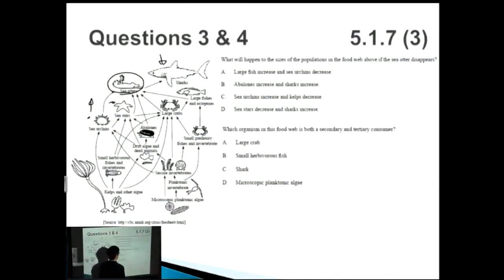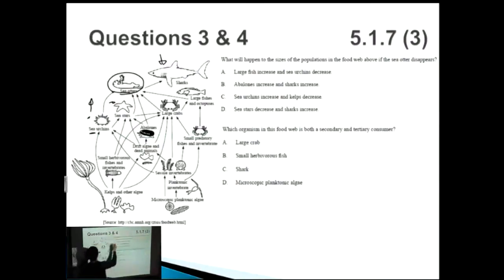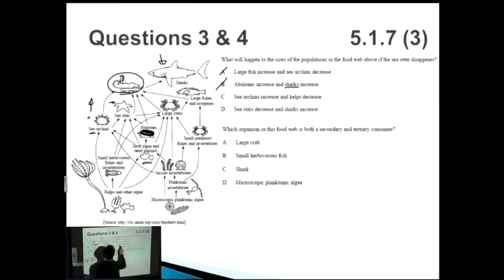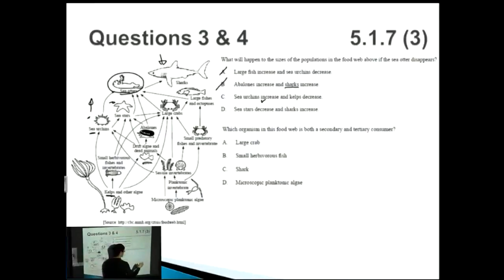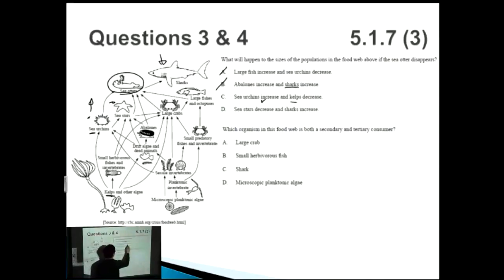Looking at option A: large fish increase and sea urchins decrease — we'd expect sea urchins to increase, so not A. Option B: abalone's increase and sharks increase — we already said sharks should decrease because they have less food, so not B. Option C: sea urchins increase — yes, that sounds good — and kelps decrease, because with sea urchins increasing there's less predation on them so they eat more kelp, causing kelp to decrease. That seems correct. Option D: sea stars decrease and sharks increase — sharks increase is false again. The answer is C.